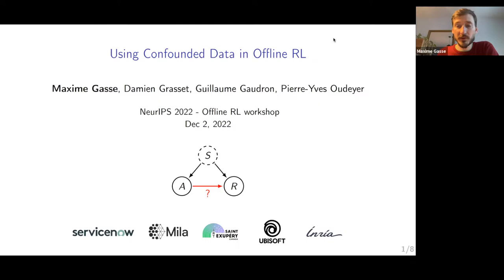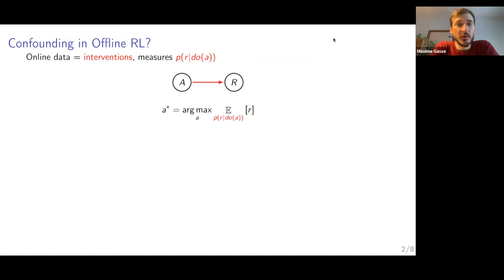So first, let's investigate what is confounding in offline RL. When you do online RL, you do interventions. You have the learning agent that itself acts on the system and measures the outcome of its actions. You can write this as P of R given do of A. A is the action, R is the reward. So this would be a simple bandit setting. You want to find the action that maximizes the expected reward given this causal model.